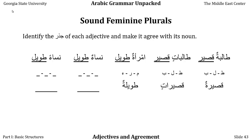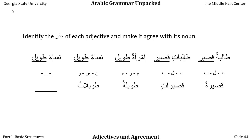Let's make the women tall. Even though nisa' does not have the alif-ta' ending that marks human female plural the way talibat does, we have to make tawil human feminine plural to agree. So it won't rhyme here, but it's still correct: nisa'un tawilatun, tall women. Note that when adding -at to a word ending in lam, we use the lam-alif character — something that takes a little getting used to.